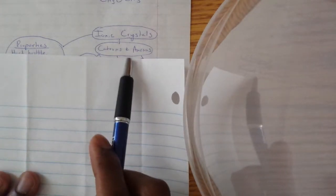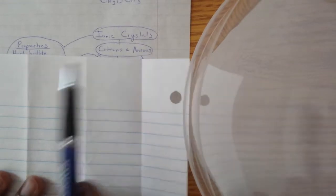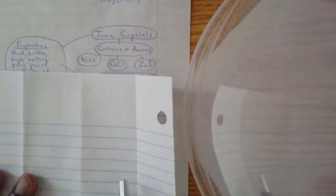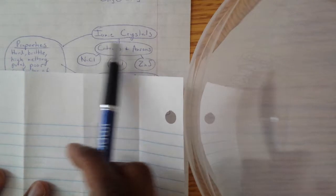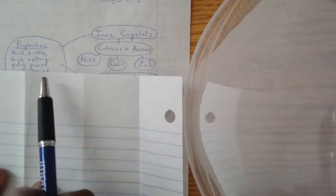The attractive force that makes cations stick to anions are called coulombic forces. These are some examples of ionic crystals because of the metal and non-metal.